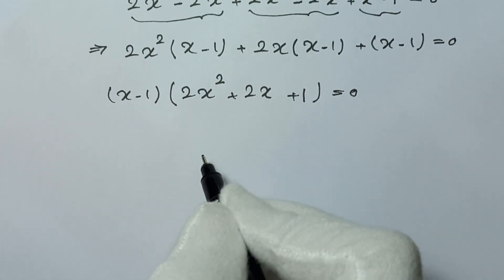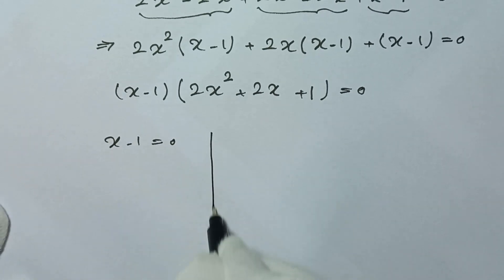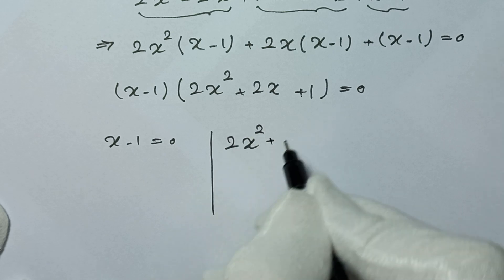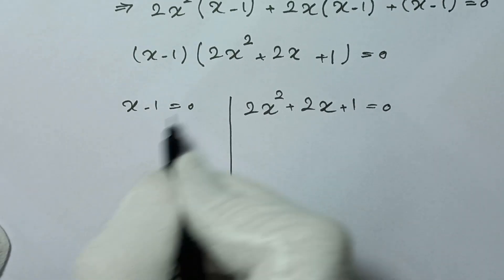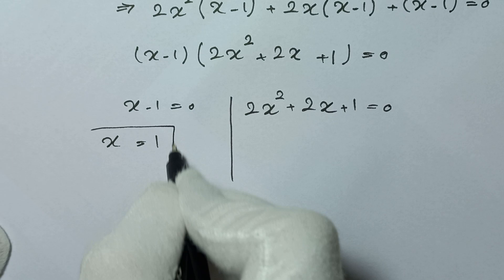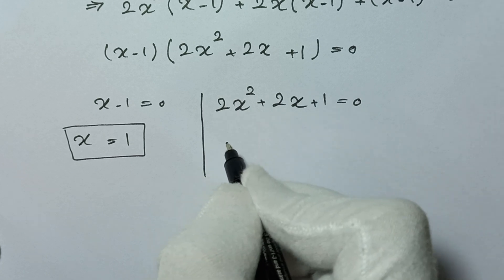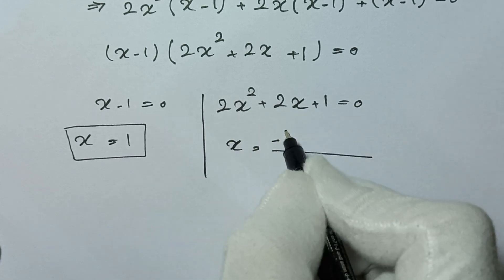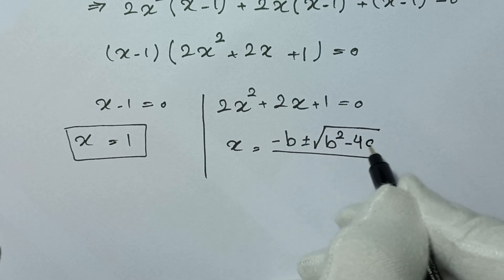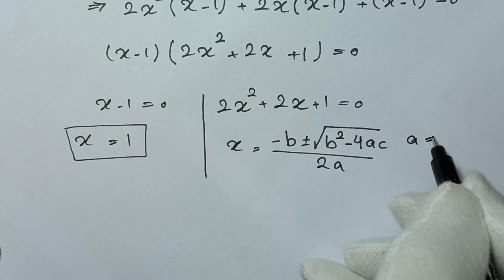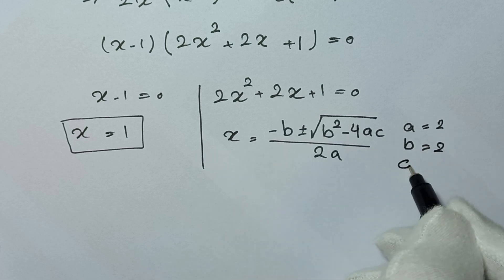We have two cases: x minus 1 equals 0, giving x equals 1 as our first answer, or 2x² plus 2x plus 1 equals 0. For the quadratic, we use the quadratic formula x equals negative b plus or minus square root of (b² minus 4ac) over 2a. Here a equals 2, b equals 2, and c equals 1.